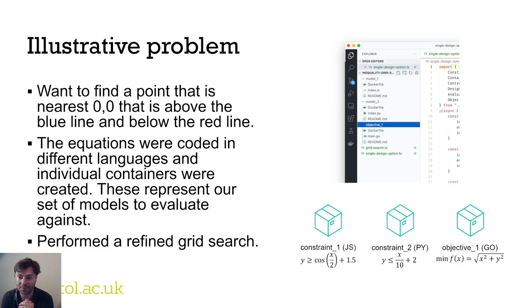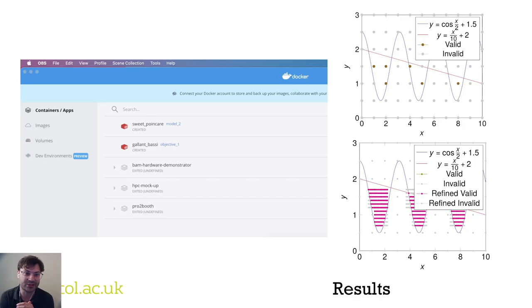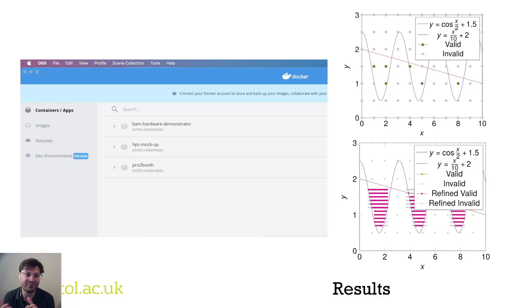We used these containers of the models to run a refined grid search approach to find the solution in that design space. Here is the system in action — the Docker dashboard shows containers being spun up, each representing an individual model evaluating part of a design option. That information is fed back into the controller and into the grid search algorithm to evaluate new options. On the right we see two figures showing two iterations of the grid search, proving that we can use software deployment toolchains to image our models and run them simultaneously to evaluate design options.